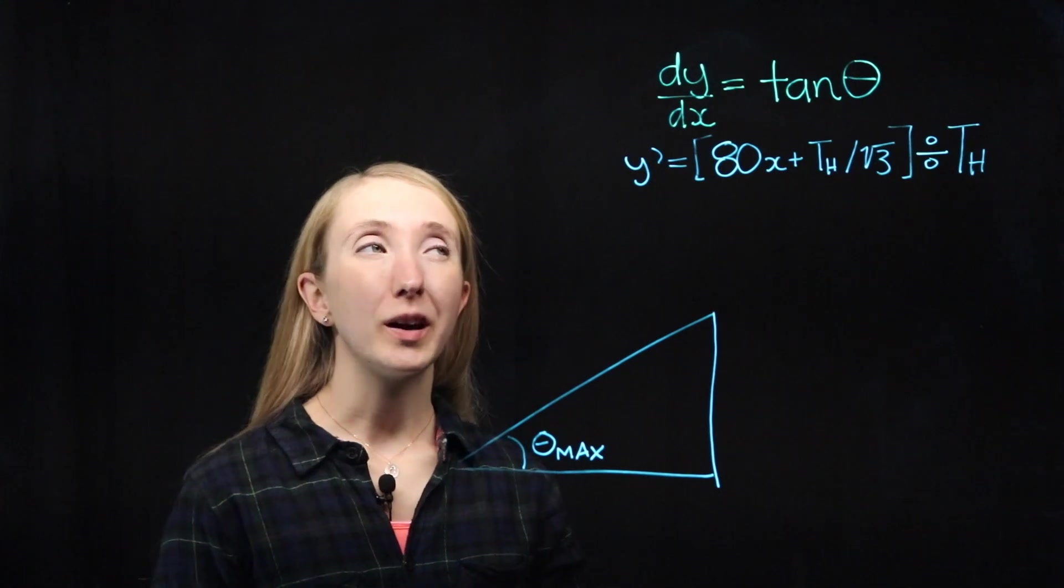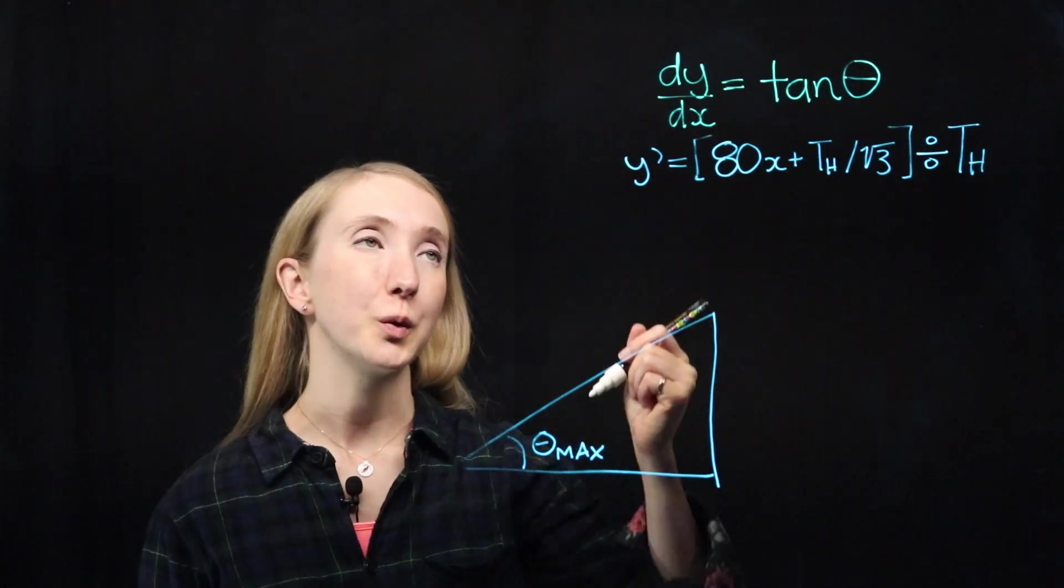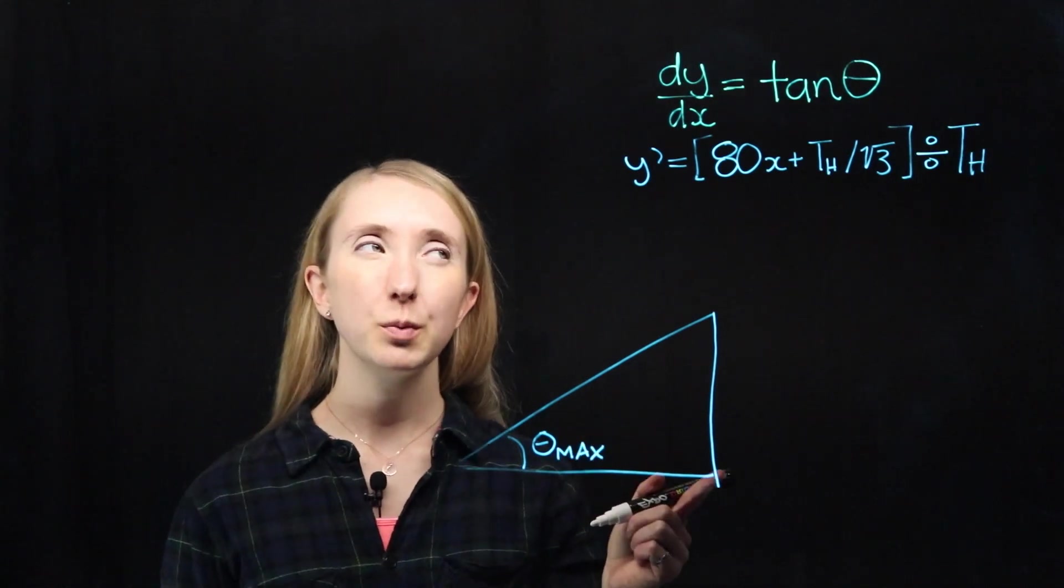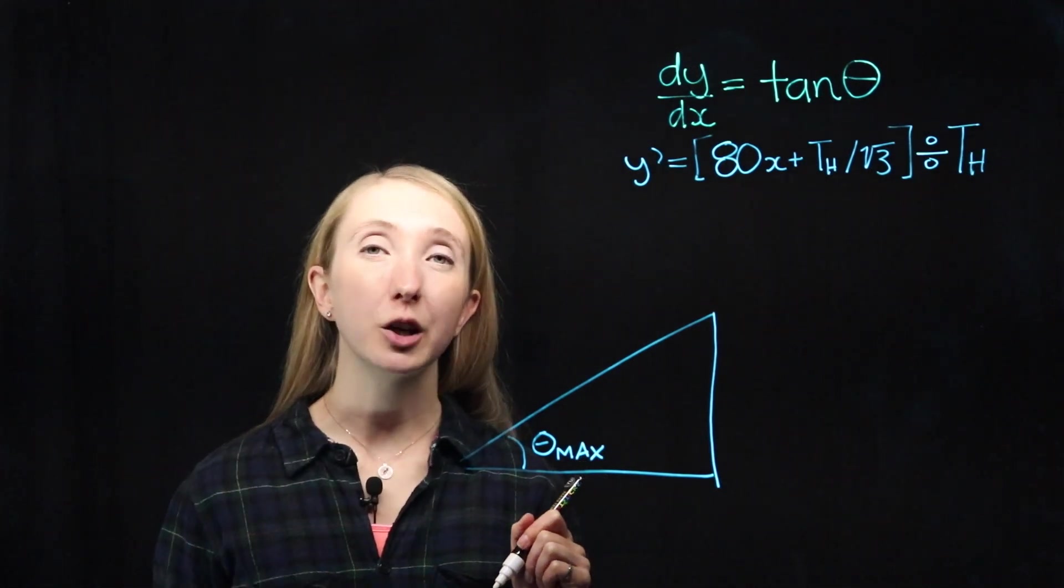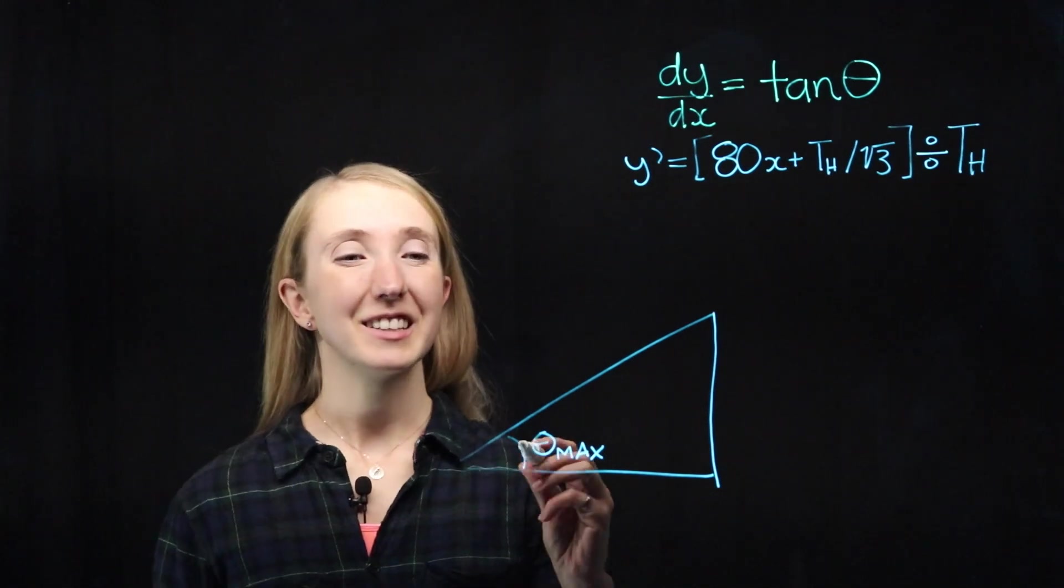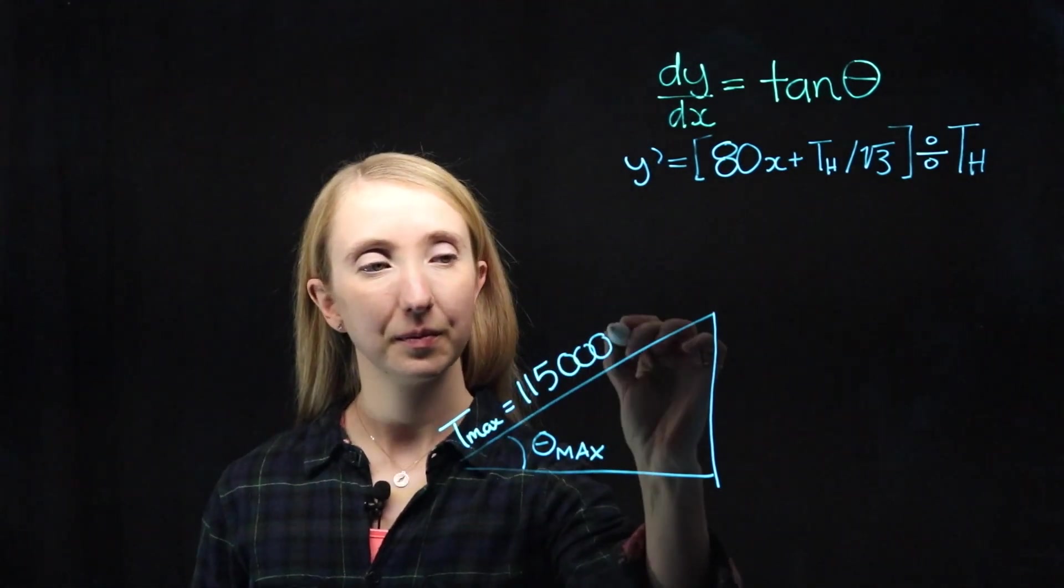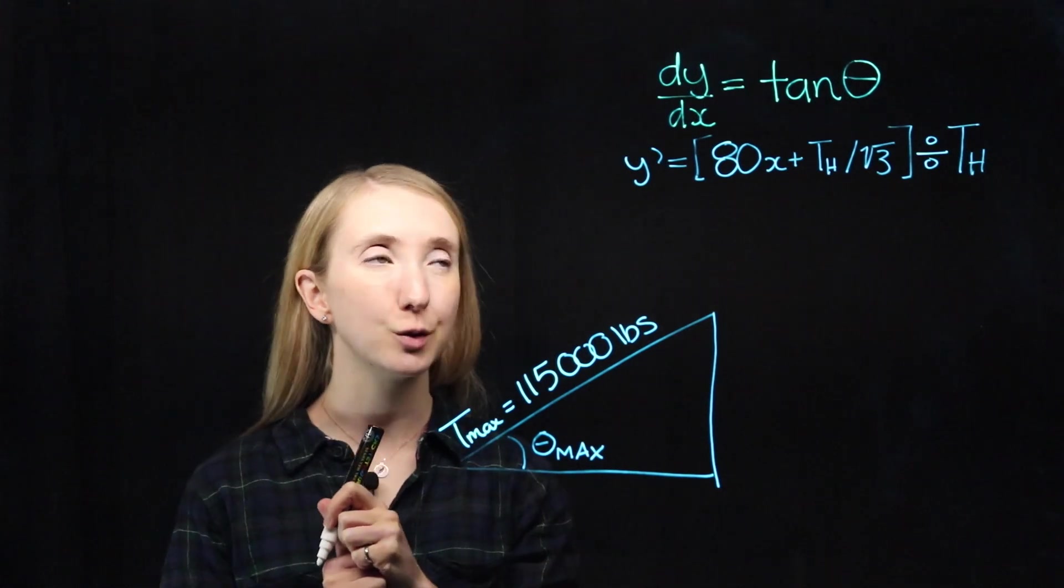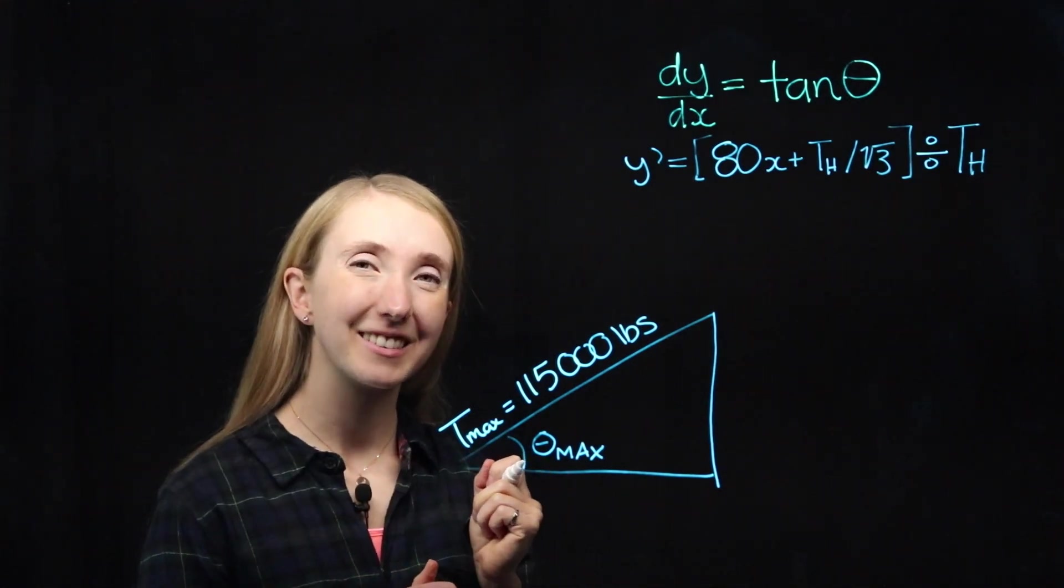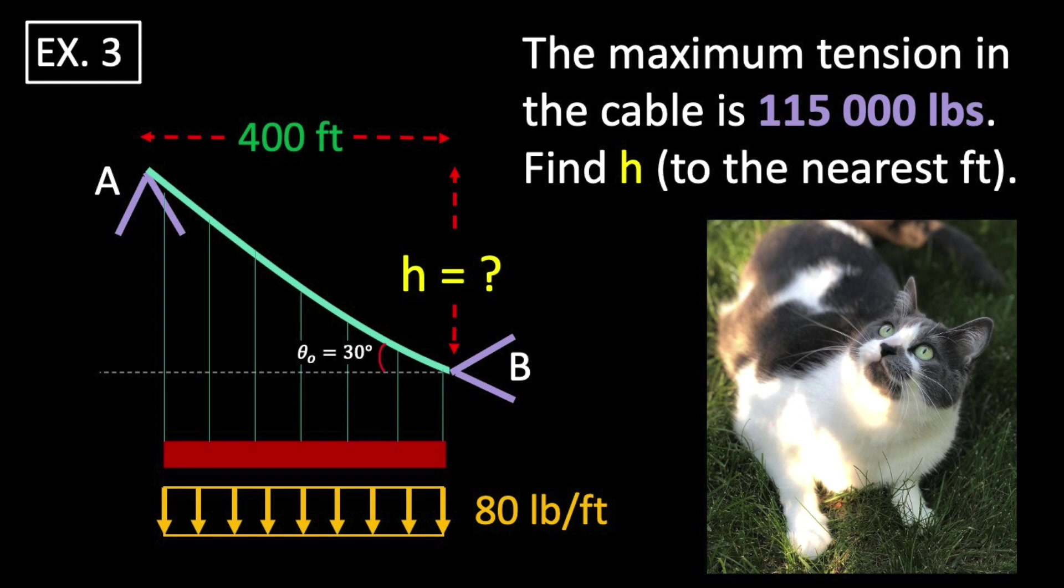We can take that C1 that we solved for and plug it into our equation for y prime. Now, at this point in our problem, we may start to think that we're stuck. But there was one more piece of information in our problem statement that we haven't used yet. Our maximum tension in the cable is equal to 115,000 pounds. So, how can we use that? Where does this maximum tension happen? It happens right near our support A, where the cable angle and cable slope are also their maximum.